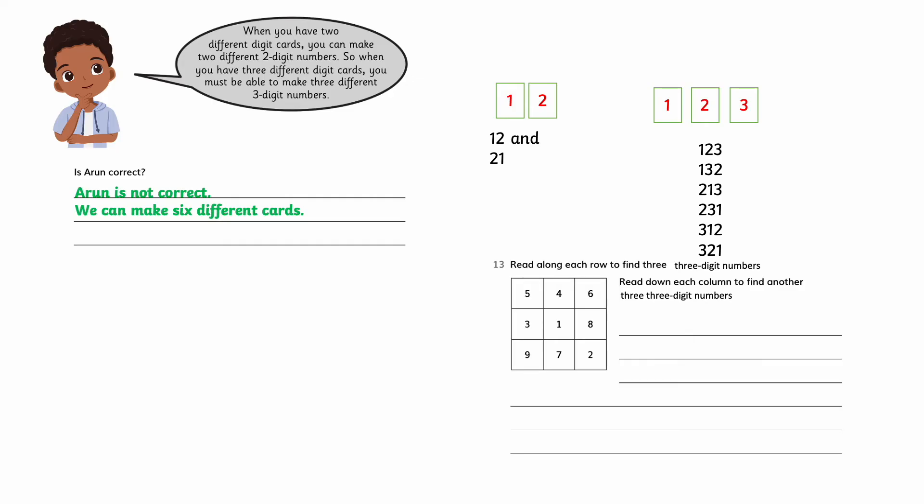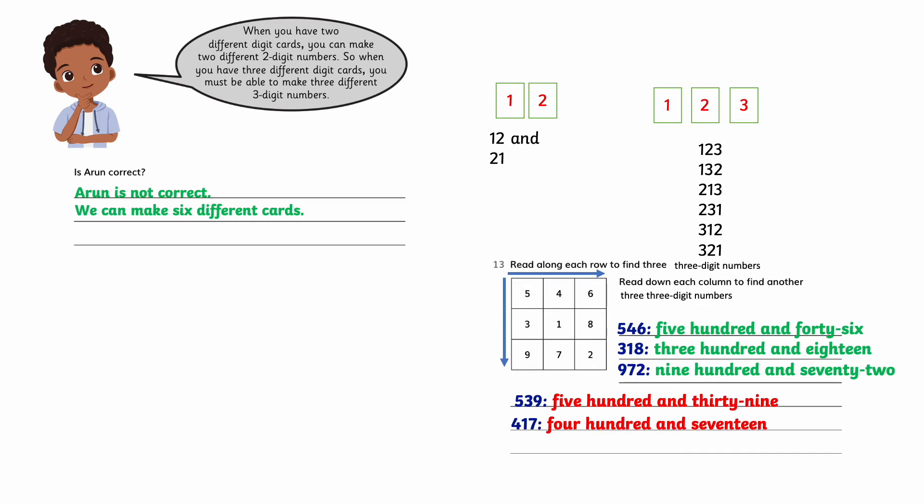Read along each row to find 3 digit numbers. Read down each column to find another 3 digit numbers. Write each number in words. 546, 318, 972, 539, 417, 682.